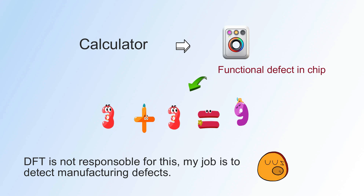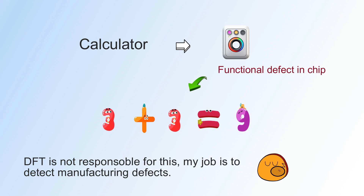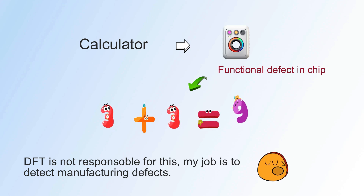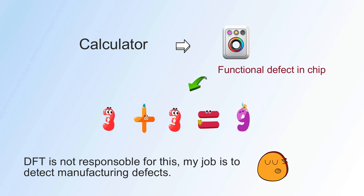Suppose a chip is manufactured to perform arithmetic calculations and it is installed in a calculator. Now if you are operating 3 plus 3 and getting output as 9, and blaming that you've enabled DFT in your chip but it's still not working properly — that is not a DFT job. Maybe your chip has been designed to function that way. DFT will only let you know that there is no manufacturing defect or fault in your chip.